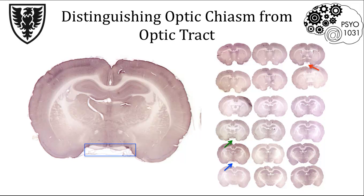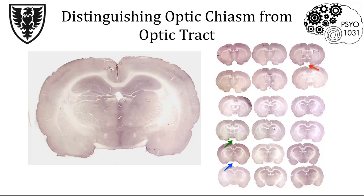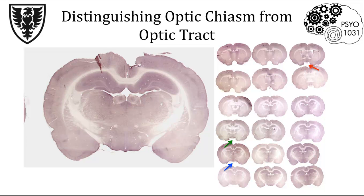If we look at the section right next door to this one in our collection, the optic chiasm actually separates, so it's not the optic chiasm anymore — this is called the optic tract, and it's visible again on the ventral surface, but here we have a left and right side. If we keep moving in a posterior direction, we can see that the optic tract separates as it moves in a lateral and slightly dorsal direction throughout the brain. So you should be armed with enough information to determine where the optic chiasm is and how to distinguish this from the optic tract.